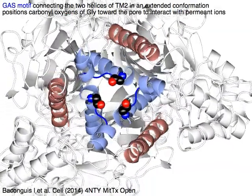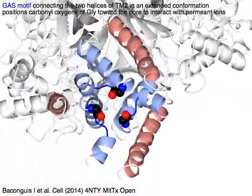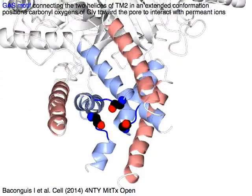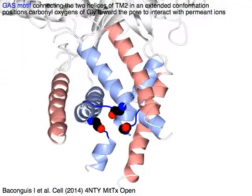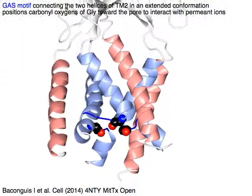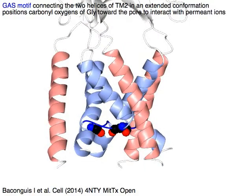The GAS motif connecting the two helices of TM2 in blue, in an extended conformation, positions carbonyl oxygens of glycine toward the pore to interact with permeant ions.